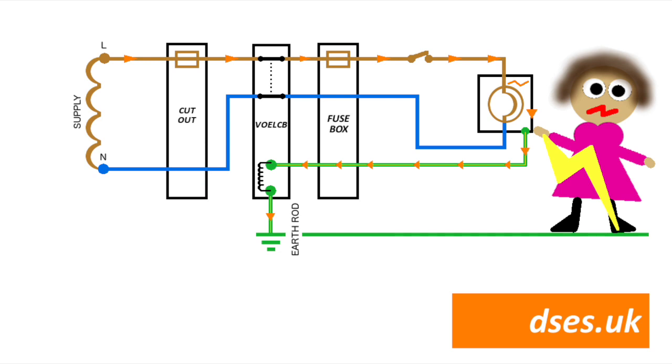So steps would presumably have to be taken to isolate this pipe work from earth. Although the installation I removed this device from had a bonded metallic gas pipe, which again means that in the event of a fault, the fault current may have been through the gas pipe work and not through the rod, leaving this device impotent.